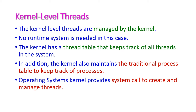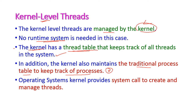Kernel level threads are created and managed by the kernel. No runtime system is needed. The kernel maintains its own thread table to track all threads in the system, and also a process table to track all processes. The OS kernel provides separate system calls for creating and managing threads. Threads are created and managed through system calls, not user level functions.